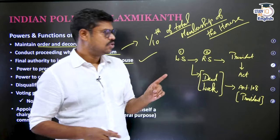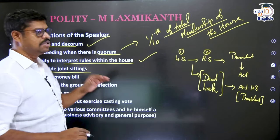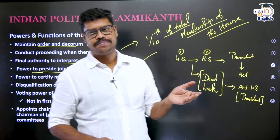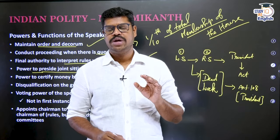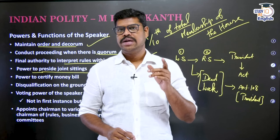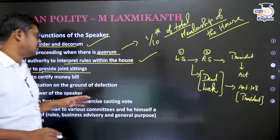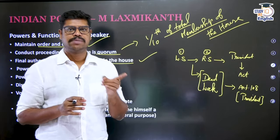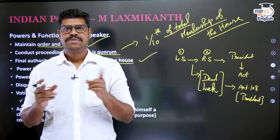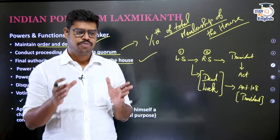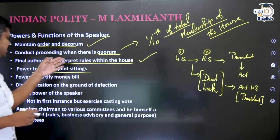It is only the Speaker who has the power to preside over a joint sitting. In the absence of the Speaker, the Deputy Speaker can preside. In the absence of both the Speaker and the Deputy Speaker, the Deputy Chairman of the Rajya Sabha can preside. However, the Chairman of the Rajya Sabha cannot preside over a joint sitting. This is very important to remember: Speaker → Deputy Speaker → Deputy Chairman of Rajya Sabha, in that order of precedence for presiding over joint sittings.